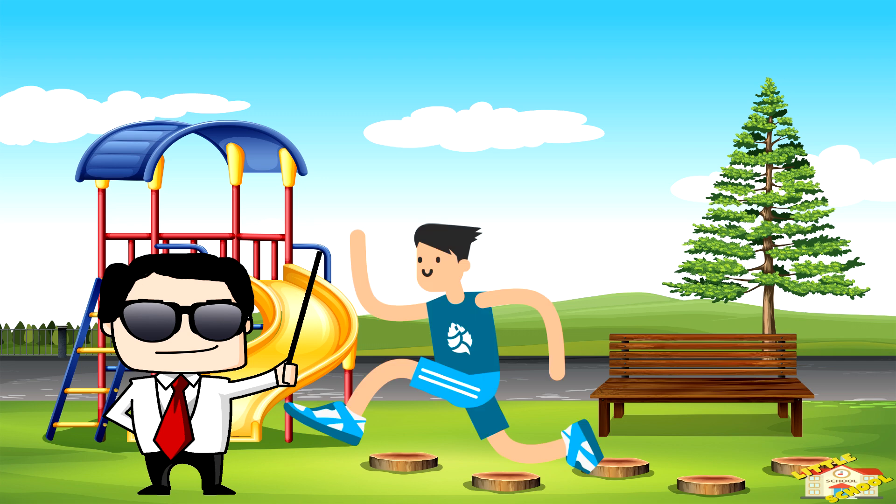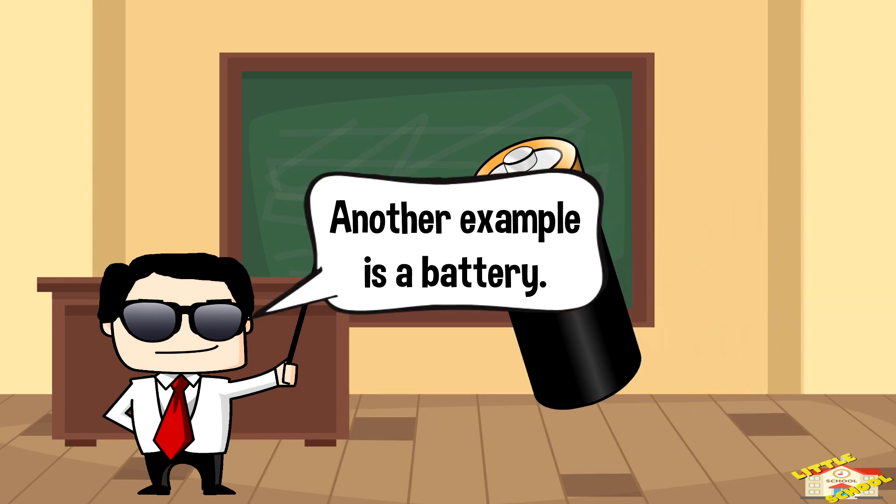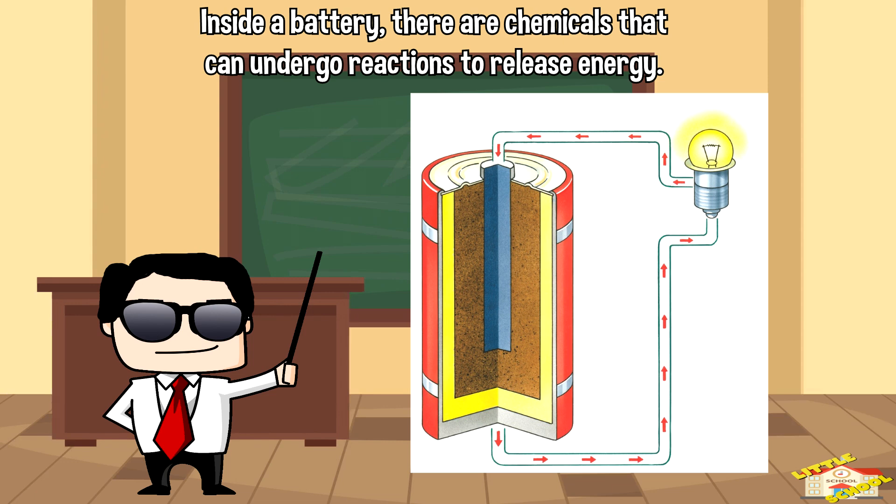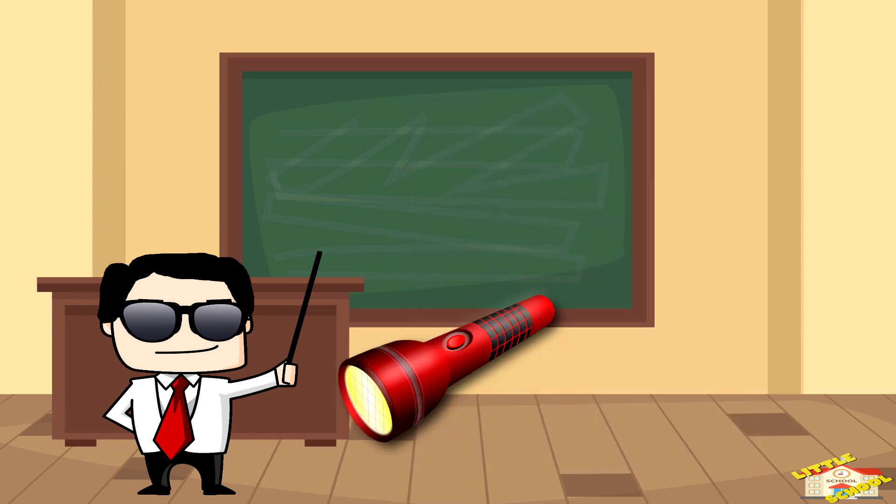Another example is a battery. Inside a battery there are chemicals that can undergo reactions to release energy. This energy flows through wires and powers your devices, whether it's a flashlight, remote control, or your smartphone.